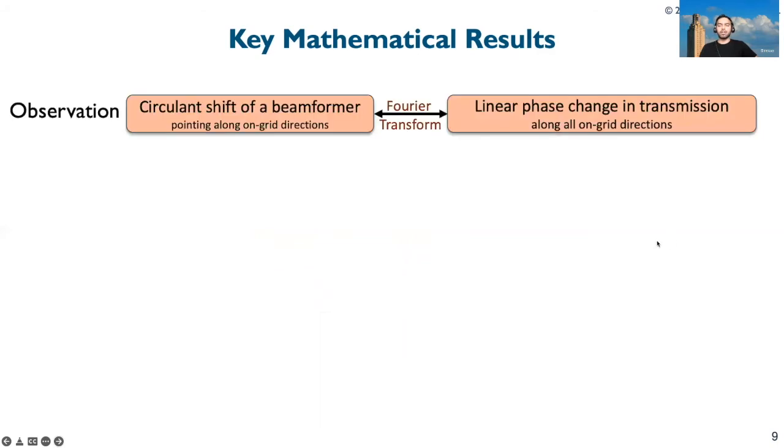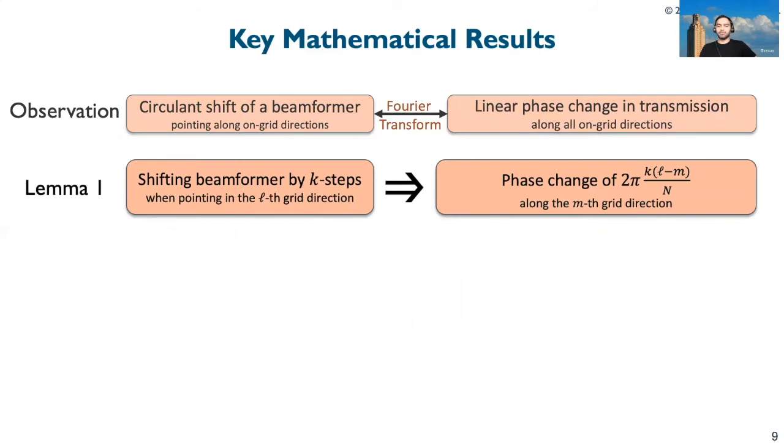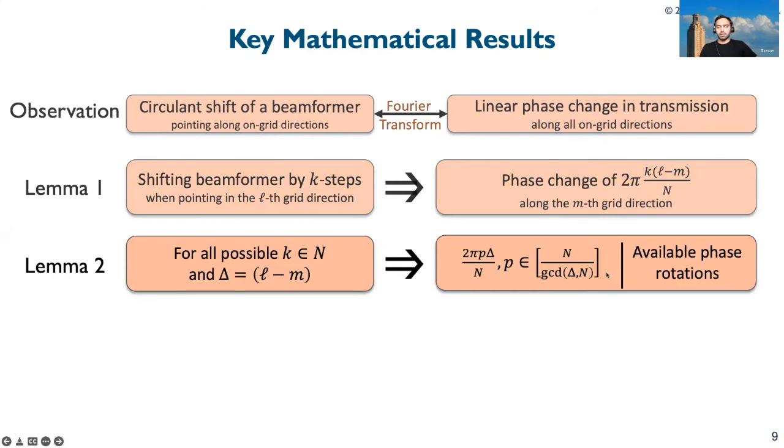To see how CSB defense works in theory, first recall that beamformer and beamforming gains along on-grid directions make DFT pair. Then, circular shift of a beamformer introduces linear phase change in the array gain vector. So in lemma one of the paper, we first show that when transmitter shifts the beamformer pointing to Lth direction by K steps, then phase change along Mth direction is given by this term. In lemma two, we show that if the transmitter randomizes K, then there are only certain phase changes that are available along M direction. For instance, if delta N and N both are even, then that limits the possible number of phase rotations available.